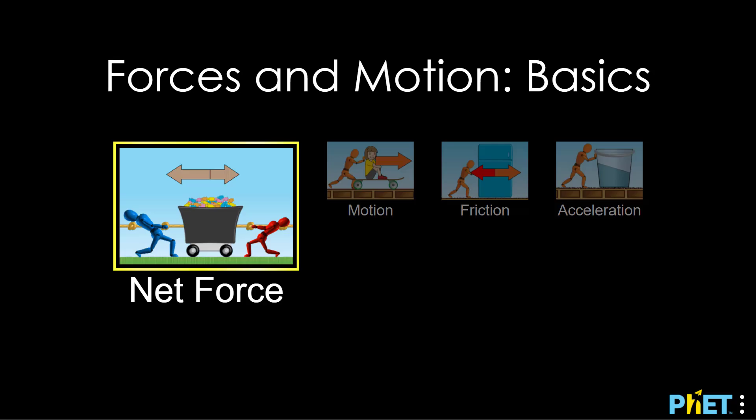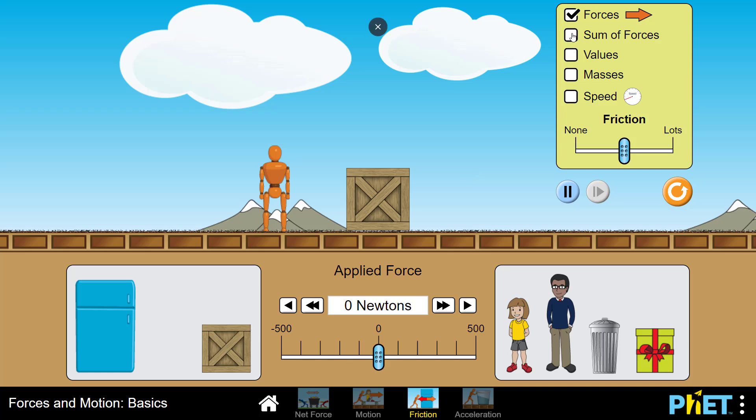Once you start the application, click into friction. Turn on all of these options and at any point if you need to reset, click this orange button and start all over. We're going to click all of these options to start out with.